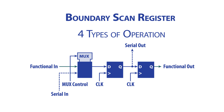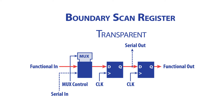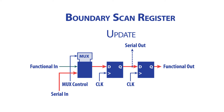Typical boundary scan registers can have four different types of operations. One operation allows data to pass through the registers transparently without modification — this is the typical state during normal functional operation. Another operation captures data coming into the register without changing its value — this is how test data is observed. A third operation updates the output of the register, disregarding incoming data — this is how stimulus is applied to the circuit under test. The fourth operation executes the serial shift, enabling test access to each register. Shifting the test response from the boundary registers into an off-board register allows it to be scanned and compared to the expected response — hence the name boundary scan.